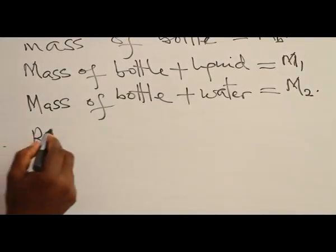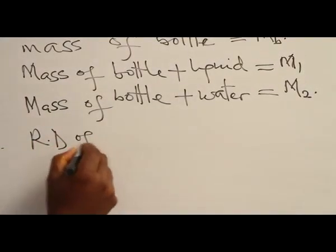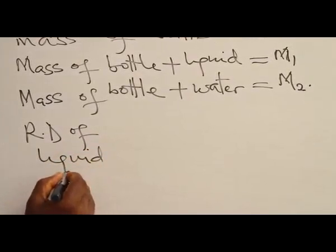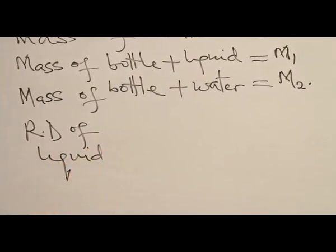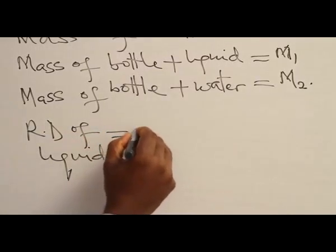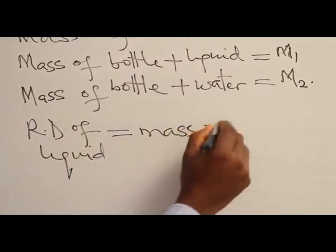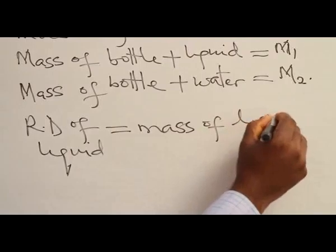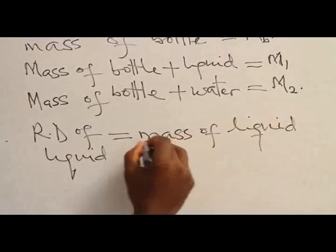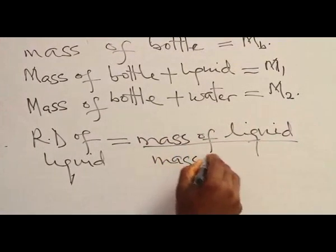The relative density of a liquid — it could be any liquid, maybe kerosene or red oil — will therefore give us the mass of that liquid in the bottle divided by the mass of water.